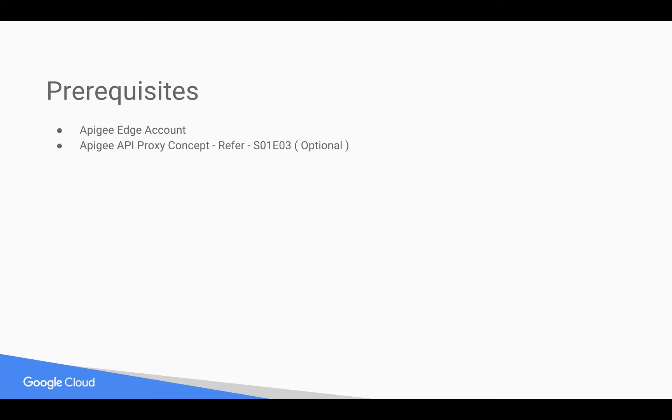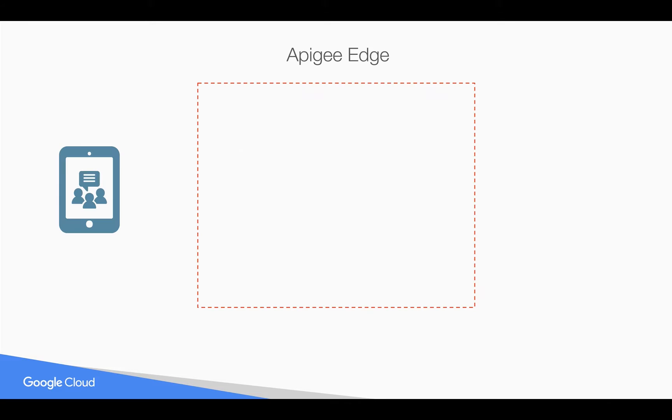Prerequisites for this video: you need an Apigee Edge account — you can sign up at apigee.com/edge. You also need a basic understanding of Apigee API proxy; for that you can refer to the earlier 4-minute videos.